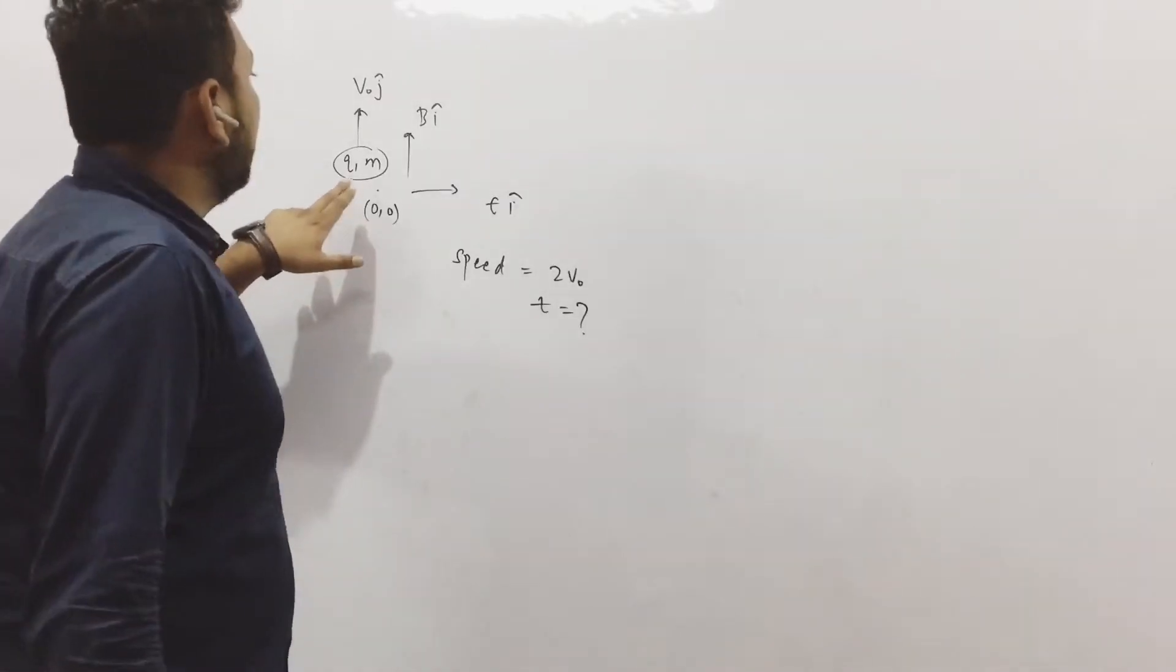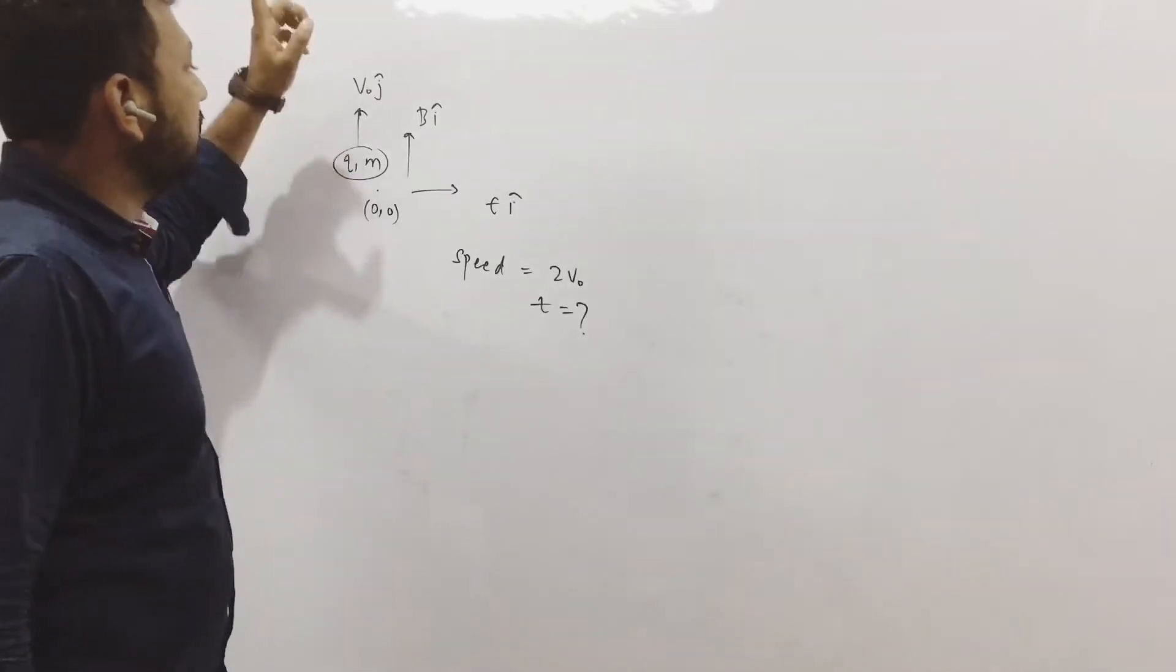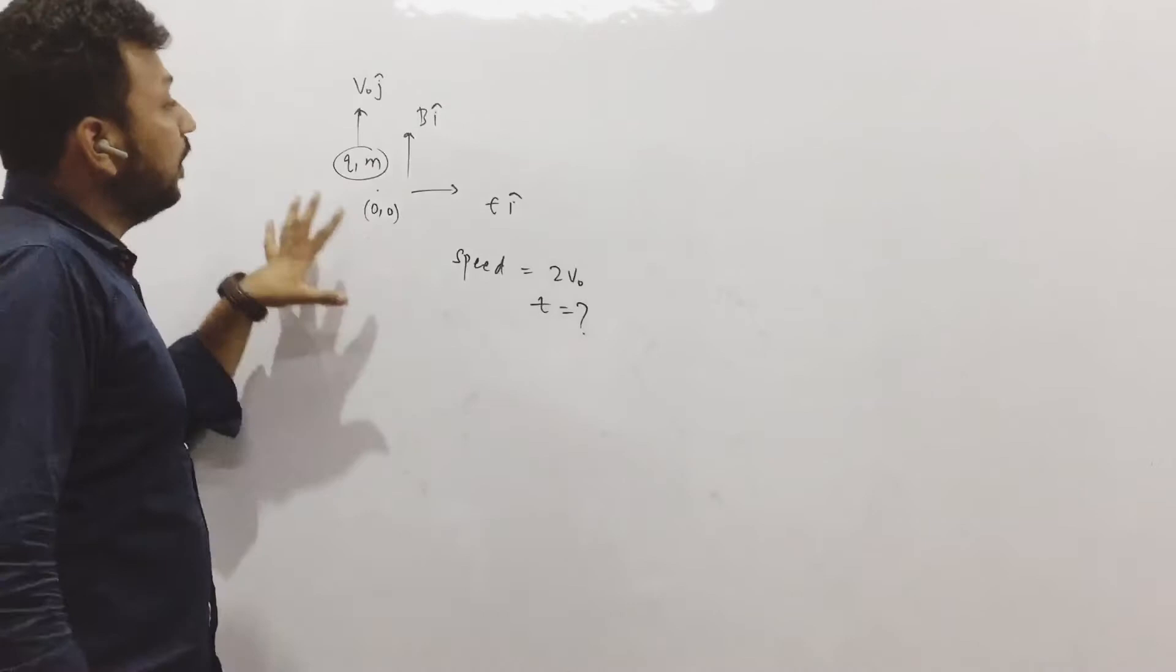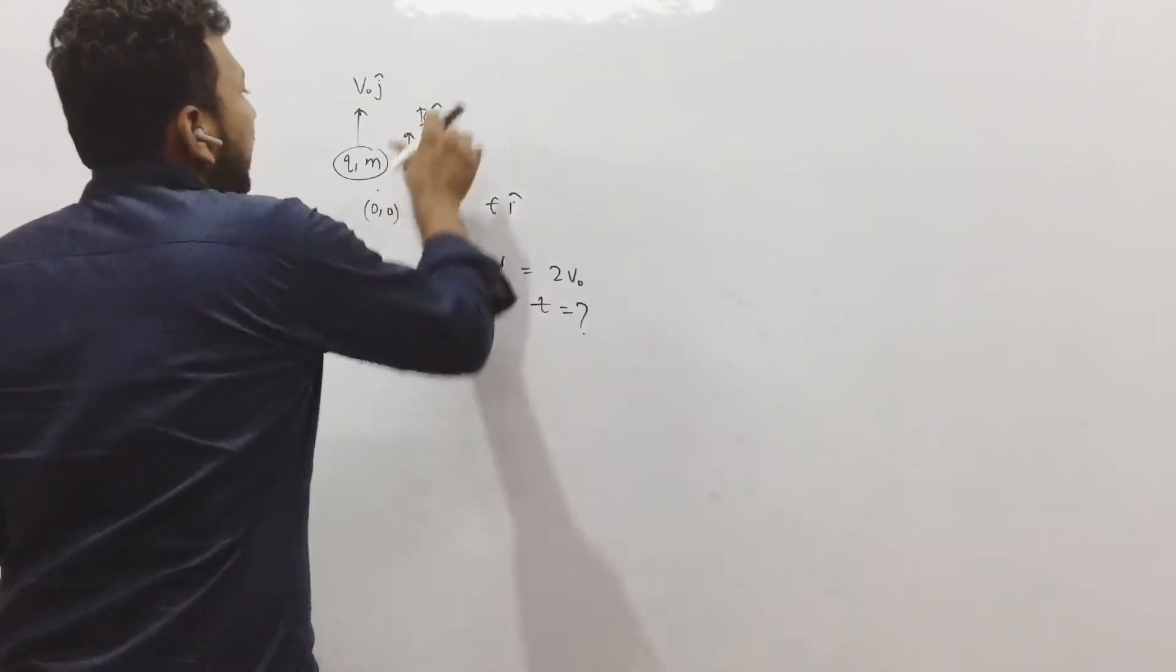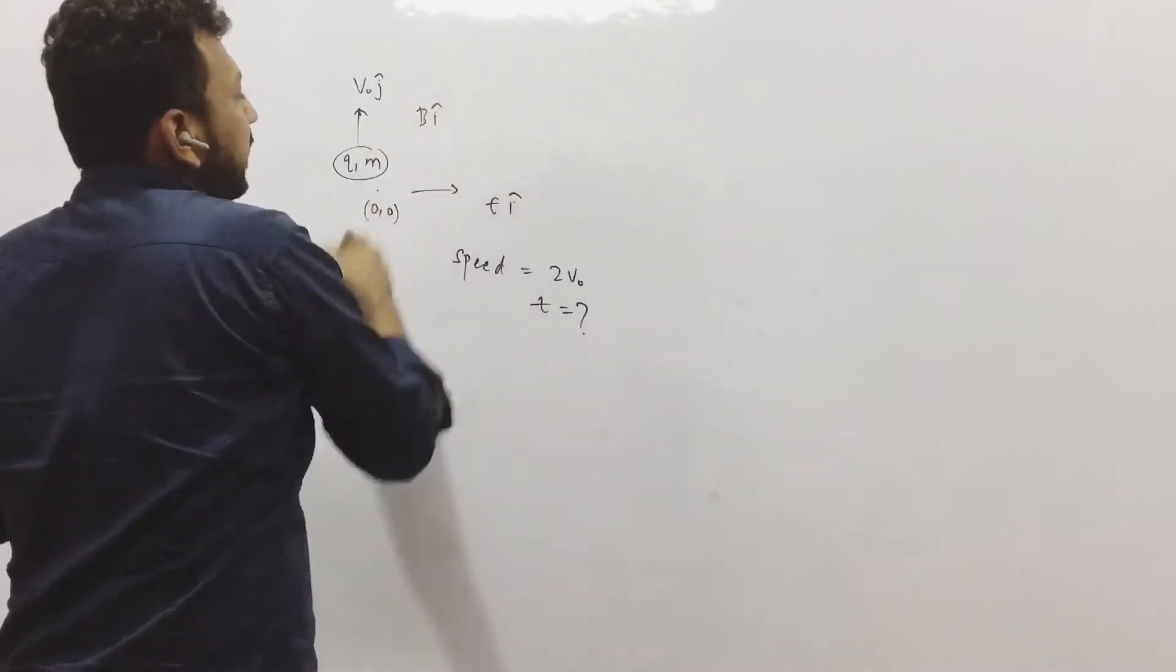So the question goes like this: there is a charged particle Q with mass m, it has a velocity v0 j cap, and there is an electric field E0 i cap and magnetic field B also i cap, not in the upward direction, B also i cap only.